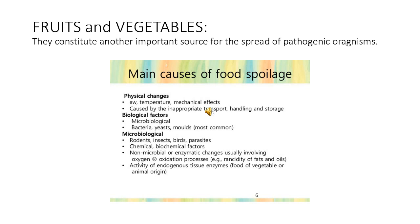Biological factors causing food spoilage include microbiological agents such as bacteria, yeasts, and molds. Macrobiological factors include rodents, insects, birds, and parasites. Chemical and biochemical factors include non-microbial or enzymatic changes usually involving oxidation processes, such as rancidity of fats and oils, activity of endogenous tissue enzymes, and apply to food of vegetable or animal origin.